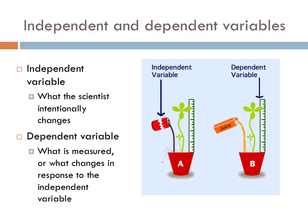There are seven important components to setting up a scientific experiment that will be described on the next few slides. This slide covers the first two components: the independent and dependent variables. In a given experiment, there should be one single thing that is modified by the scientist, and one particular thing that is being measured. The intentionally changed factor is called the independent variable, or IV.